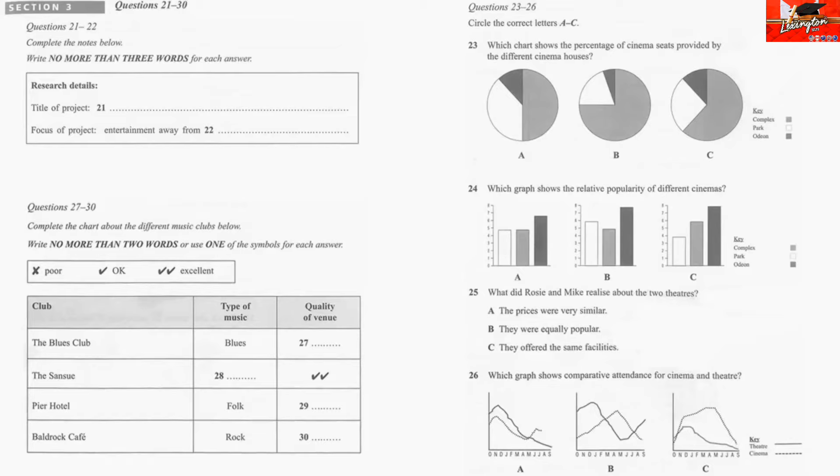First of all, the Blues Club, which obviously specialises in blues music. This was a pretty small place, and the seating was minimal, so we didn't give that a very good rating. No, we don't recommend that one, really. Then the Sansu, which plays a lot of South American music. It was a big place, very lively, good performers, so two ticks for that one.